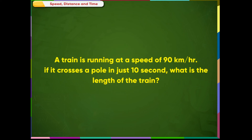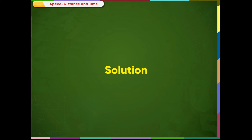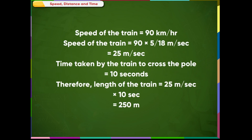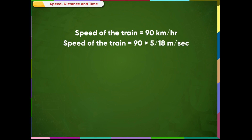Example 2: A train is running at a speed of 90 kilometer per hour. If it crosses a pole in just 10 seconds, what is the length of the train? Solution: Speed of the train is equal to 90 kilometer per hour, which is equal to 90 multiplied by 5 by 18 meter per second, equal to 25 meter per second.